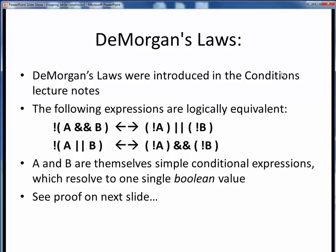As a similar refresher, back in the conditions lecture material we also presented the two DeMorgan's laws, and we said we'd come back to them later on. Well, now it's later on. Incidentally, DeMorgan's laws have absolutely nothing to do with that brand of rum with a pirate on it. DeMorgan's laws are simply two logical equivalences in Boolean logic, which assert that these two expressions are logically equivalent. Here again, A and B themselves represent simpler conditional expressions which resolve to one single Boolean value, true or false.